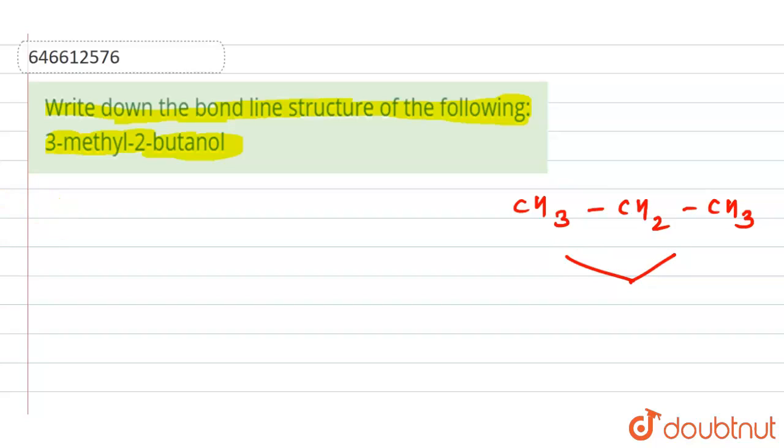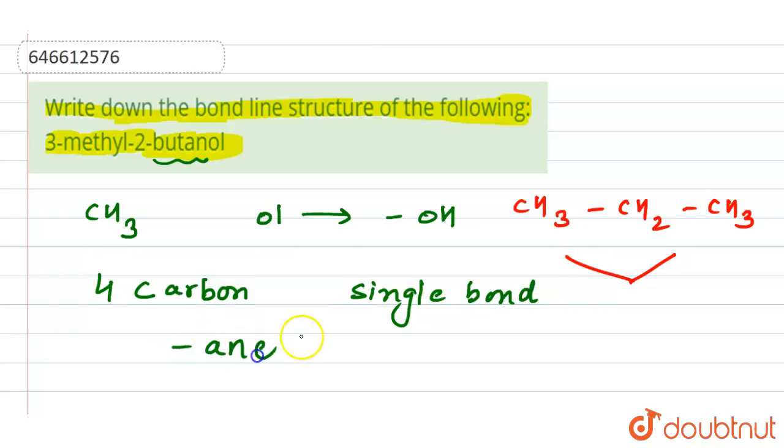Here we have methyl means CH3 group, and ol is the suffix for the OH group. And here it is given butane. Butane means we have four carbons which are attached to each other by single bond, because here we have -ane which tells us that we have the single bond. The 'e' is removed according to the IUPAC rules when we add the suffix that is ol.